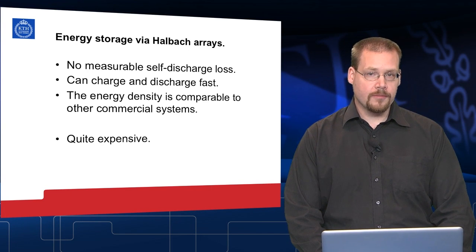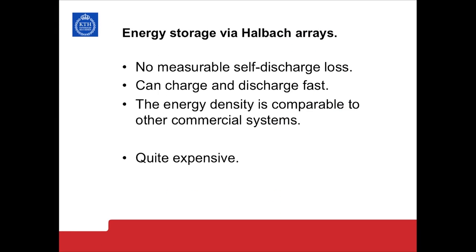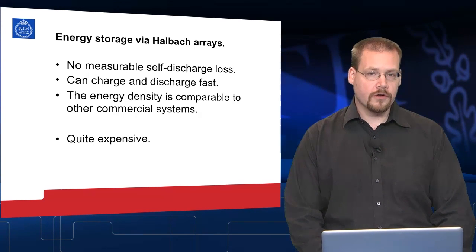Concluding, it was seen that using permanent magnets to form magnetic springs via Halbach arrays, we can store energy. The benefits for such a system are mainly that there will be no measurable self discharge loss. This as the magnets will not lose their magnetization under normal operating conditions. It was also seen that we can charge and discharge the system quite fast without introducing large losses due to inherent deficiencies. Finally, the energy density is comparable to some other types of existing commercial energy storage systems. The drawback is that the system will be expensive due to the high cost of the material consisting of rare earth metals. All in all, this leads to possible applications where energy has to be stored for a long time without degradation and then supplied quickly.